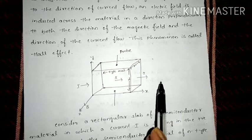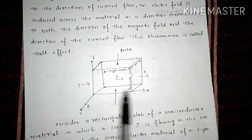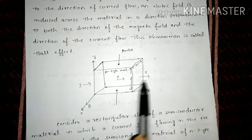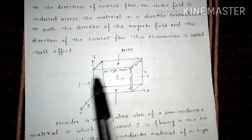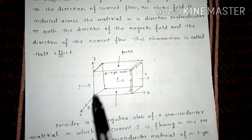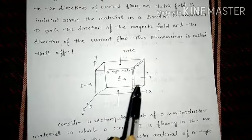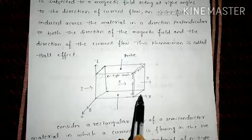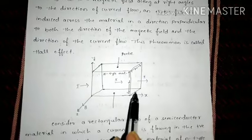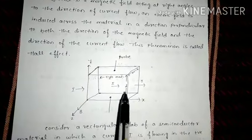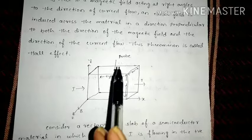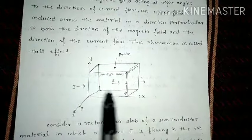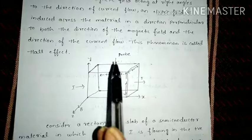Along the X coordinate the current is flowing, and if you apply an external magnetic field along the Z coordinate — which is exactly perpendicular to X — you will find that an electric field is going to be induced across the upper and the lower surface.